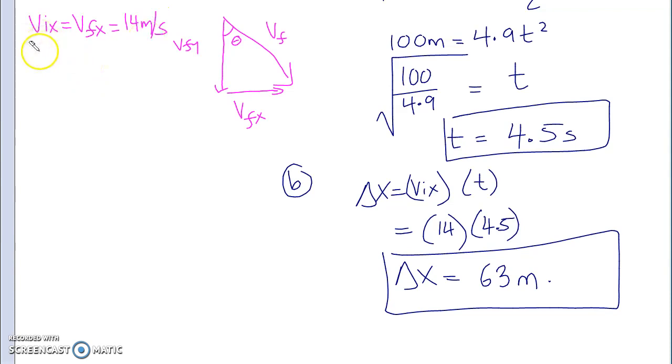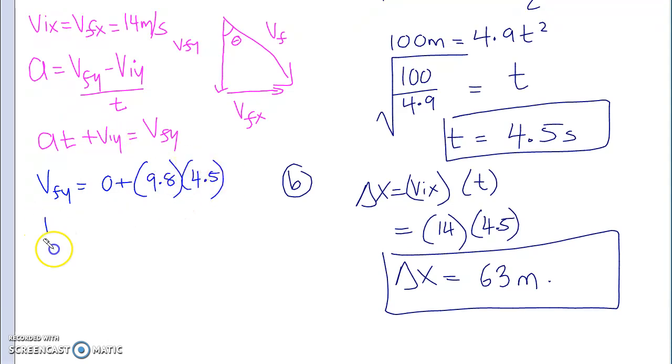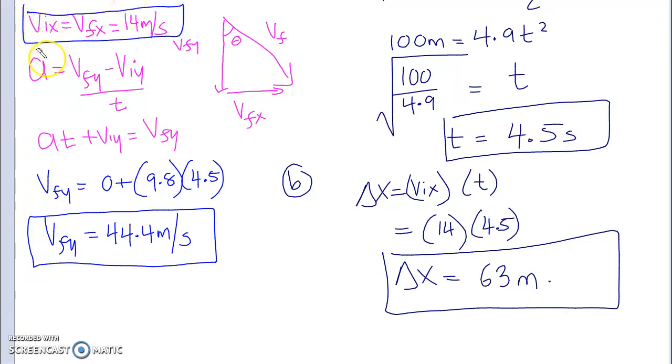The y component of velocity, on the other hand, I'll have to solve for it. So to solve for that, I'm going to do the following. A equals Vfy minus Viy divided by t. So I'm going to bring this up. So a times t plus Viy equals Vfy. Now I know that at maximum height, my Viy was 0. So this is 0 plus 9.8 times 4.5. What do you get for your Vfy? 44.4 meters per second. So this is my y component of velocity.